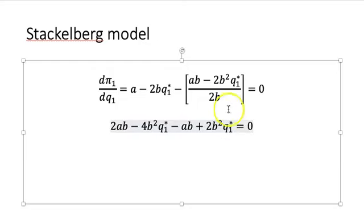We can combine these terms. You can combine these two terms and these two terms. This becomes negative 2B squared Q1 star equals negative AB.